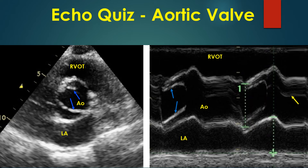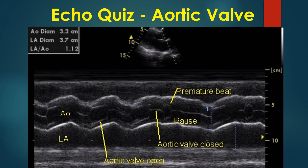The closure line is seen nearer the anterior aortic valve than the posterior valve. This eccentric closure is characteristic of bicuspid aortic valve. The central closure line of a tri-leaflet aortic valve is shown here for comparison. This image also shows a short cycle due to a premature beat and a pause following it.